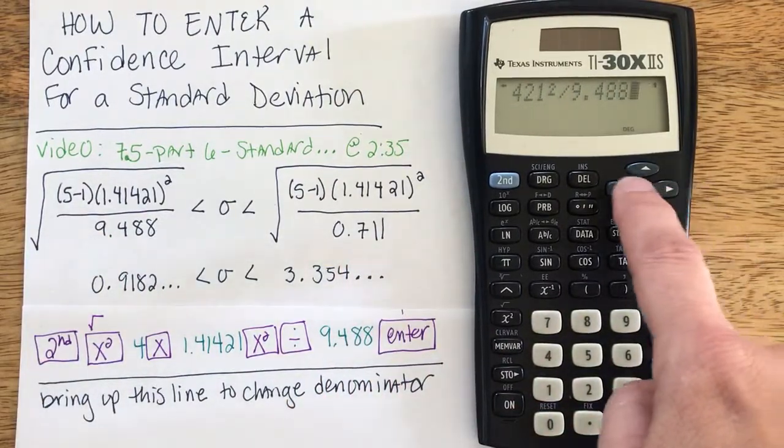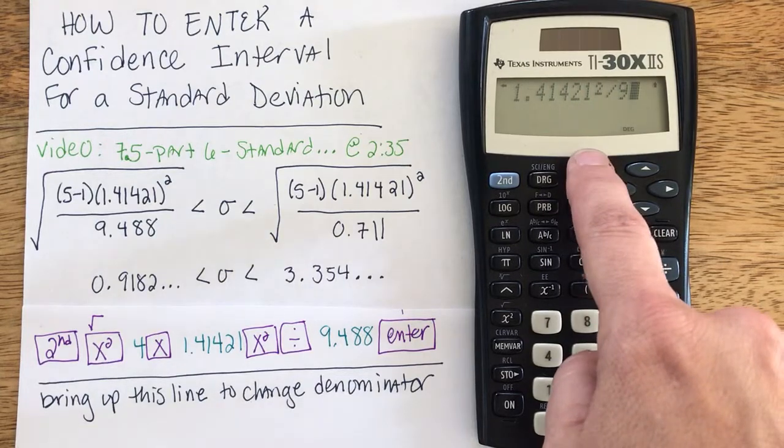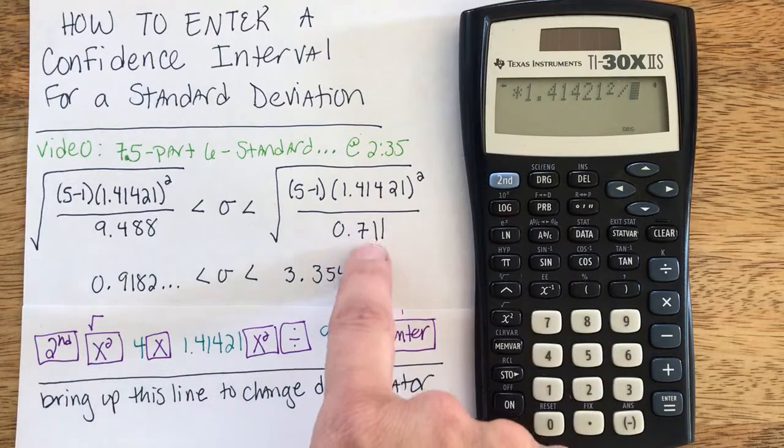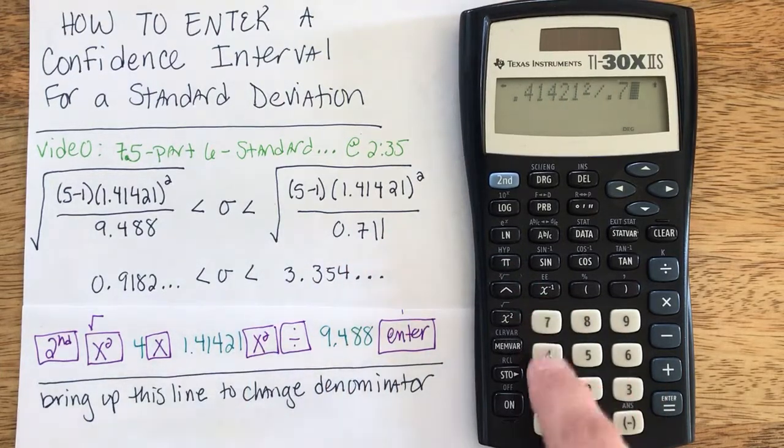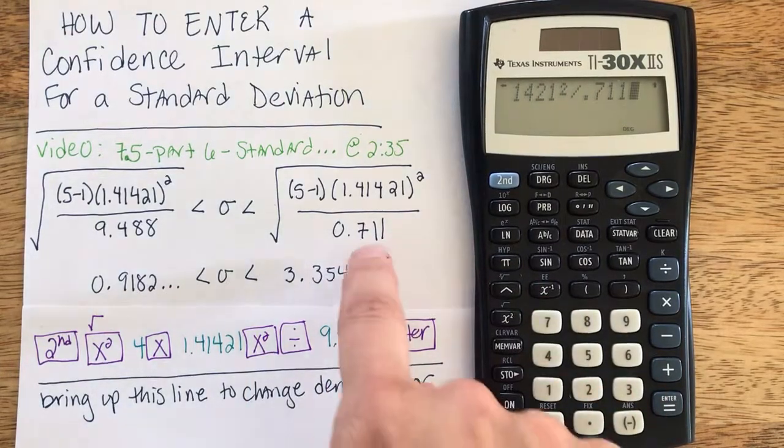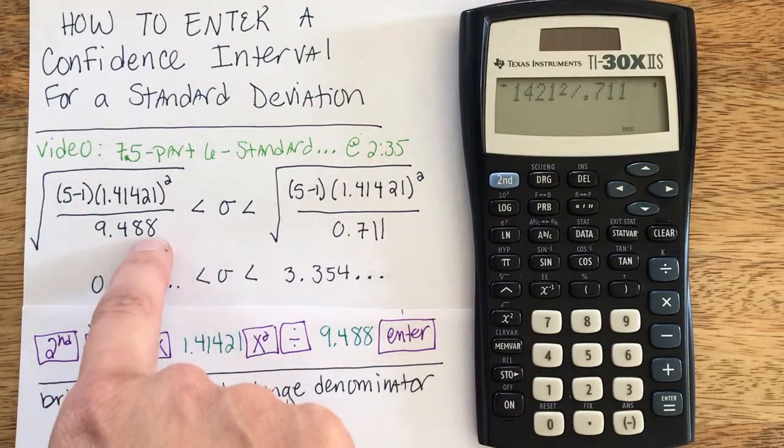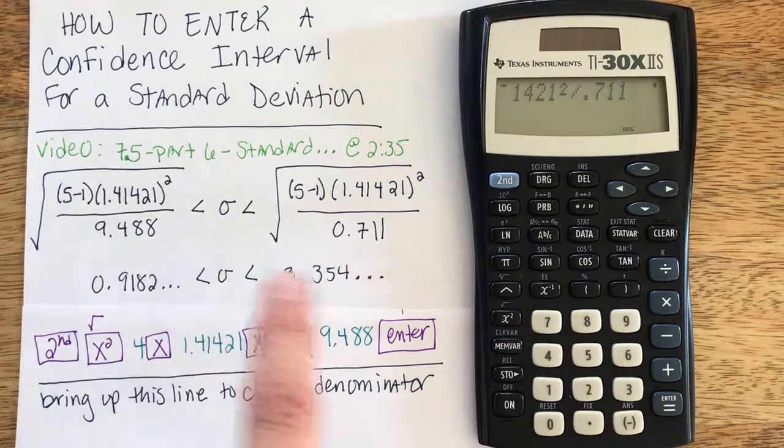A couple different ways you could do this. You could start by going as far back as you need and hitting del, delete, until you get right before the division sign, and then type the 0.711. You could also just type 0.711 over this, but notice three digits versus four. You would need to remember to delete that last eight.